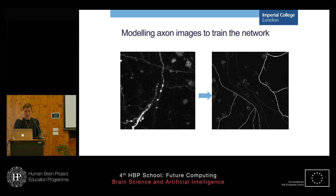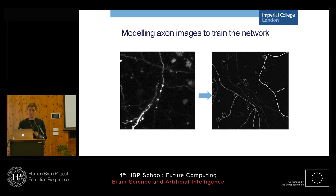To train such a network, we need thousands of images. The problem is that such a dataset would be too long and expensive to get. So what we do is create a model that produces fake images of the brain — of the neurons — and we can use them to train our network. Finally, at the end, we use the real images to get a fine tuning of the network. This would be an example of what I can generate.